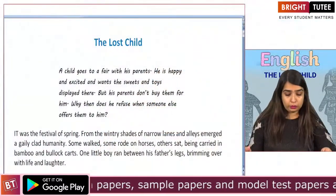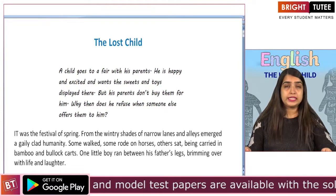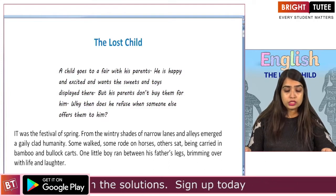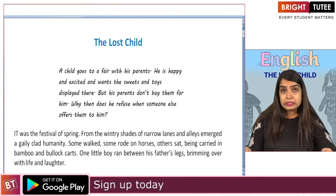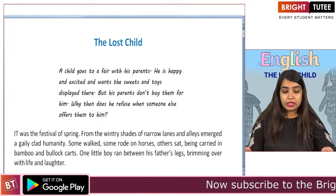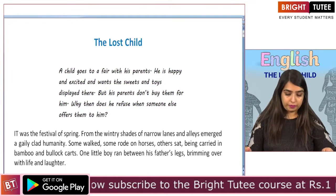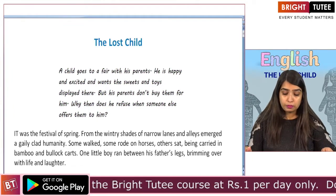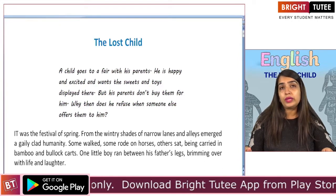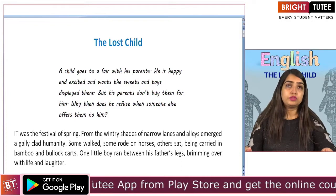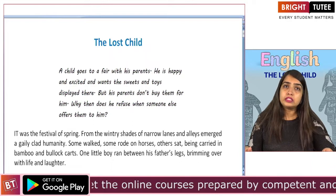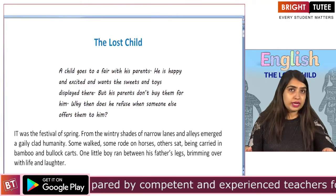Before we begin — a child goes to a fair with his parents. He is happy and excited and wants the sweets and toys displayed there. He gets attracted to many things; sweets and toys are some of them. But his parents don't buy them for him. Why does he then refuse when someone else offers them to him? As we read the story, we will find an answer to this question. So let's begin.